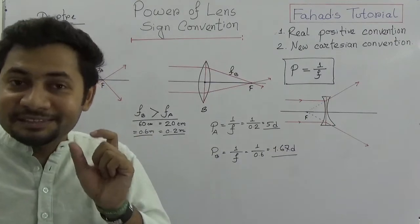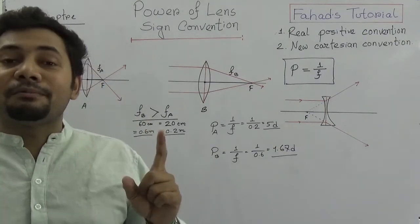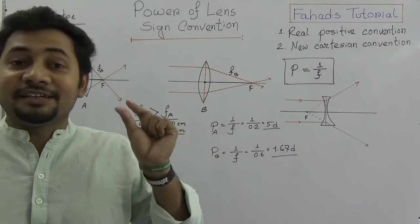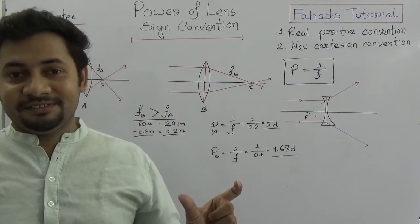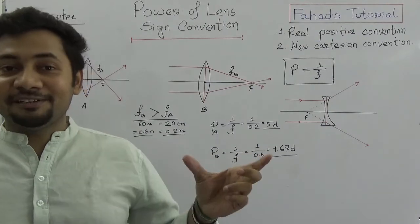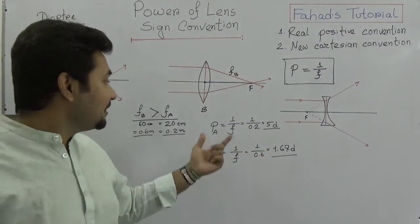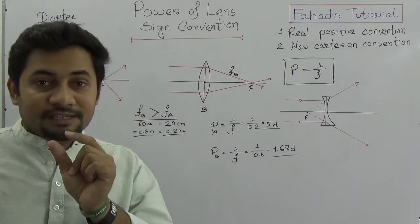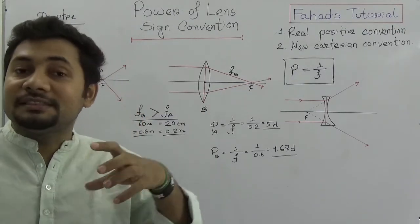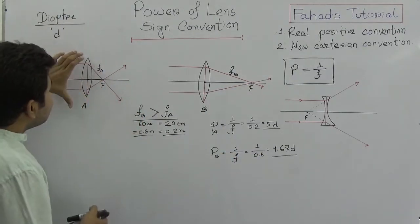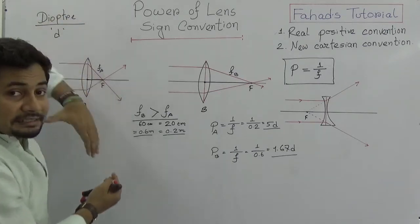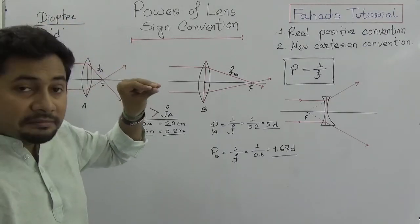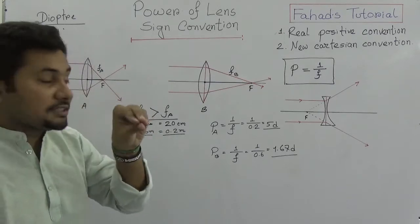We must remember: the shorter the focal length, the greater the power of the lens. The greater the focal length, the lesser the power. Those lenses with a short focal length have more power — meaning they have more capacity to convert a parallel beam into a convergent beam.